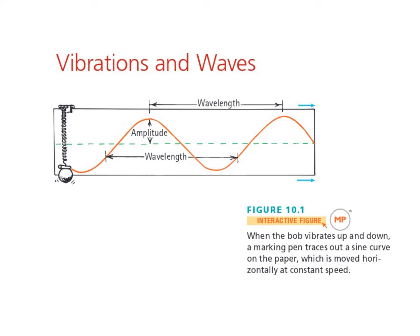This picture is a little bit weird, so I'm going to try to explain it. Here you have a mass on a spring, and if the spring were at rest, the ball would be right here. But somebody has pulled it down and let it go, so the ball is going to go up and down because that's how springs behave. This mass has a magic marker attached to it, and underneath it is a super long sheet of paper. The paper is being pulled at a steady rate.